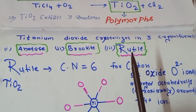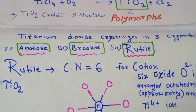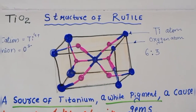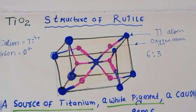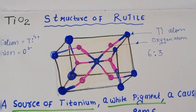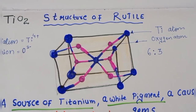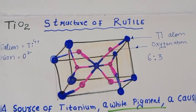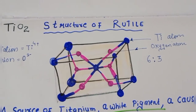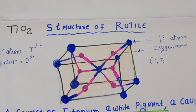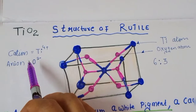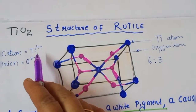The structure of TiO₂ belongs to the tetragonal crystal system. It is a primitive type and also a body-centered type (BCC). In this tetragonal crystal system, the cations are titanium ions and the anions are oxygen ions.